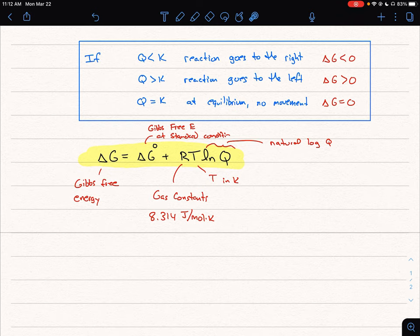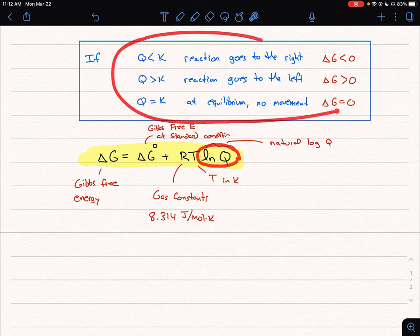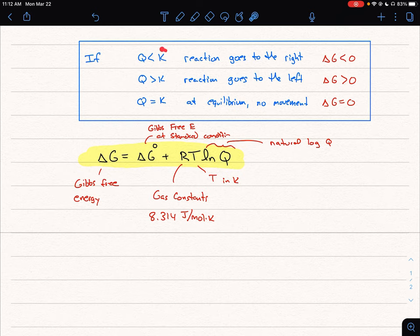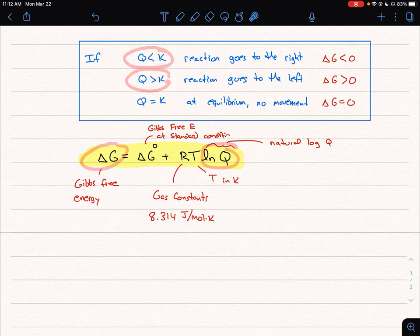So this equation will allow us to predict which way a reaction will move or what is the Gibbs free energy of a reaction. And we can see the Gibbs free energy is going to be affected by delta G under standard conditions plus the temperature of that reaction. And now we're seeing natural log of Q. And that's really what we talked about here. Right? We can see we can predict the movement of a reaction based on Q in its relationship to K. And that's kind of what this is getting at here in our Gibbs free energy.